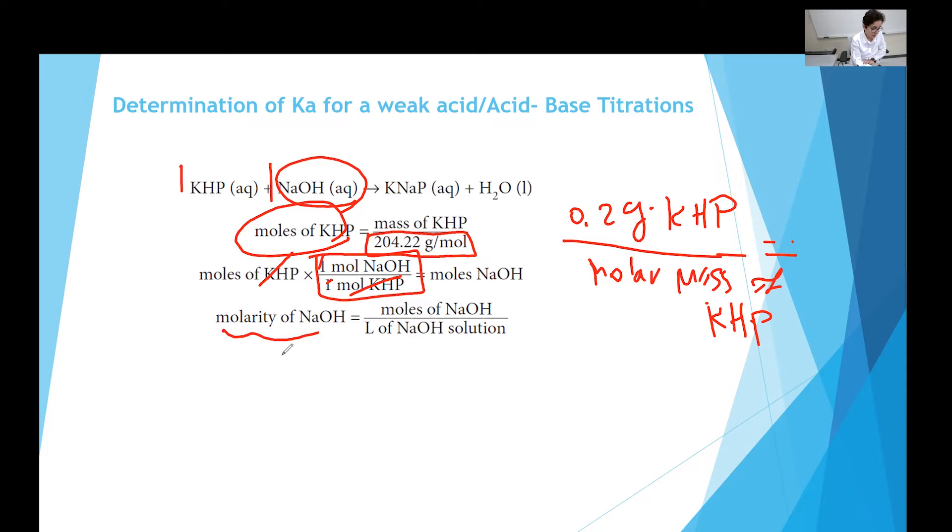Molarity of sodium hydroxide can be calculated using number of moles of sodium hydroxide, which you find indirectly from moles of KHP, divided by liters of sodium hydroxide solution. How do you find liters of sodium hydroxide solution? You are using burette for this titration. So you have your initial reading and final reading. Let's say if the initial reading is zero and the final reading is 32.05.